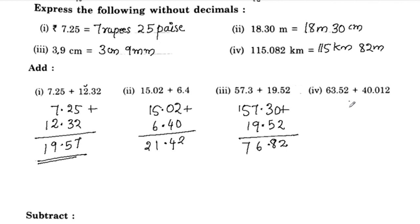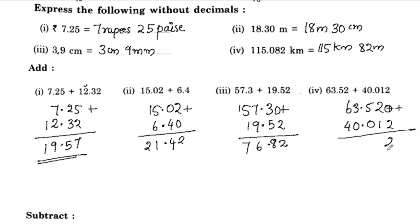Next, express the following because of decimals. Number two: 0 plus 1 is 1, 3, 5, 3, 6 plus 4 is 10. Now 30 is 3.532.